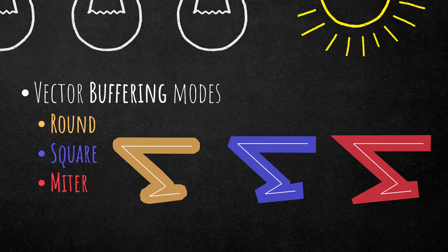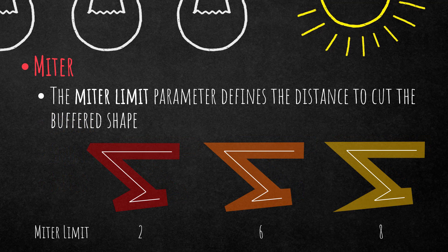As a user you can define the distance of a buffer — three meters, ten meters, one hundred meters. The miter limit can be defined when you choose miter as the buffer type, and it's a parameter that defines the distance at which to cut the buffer shape off.